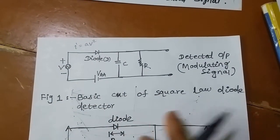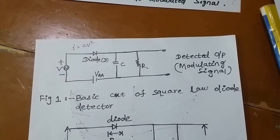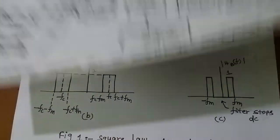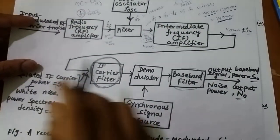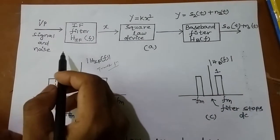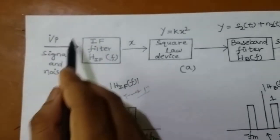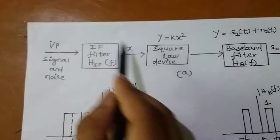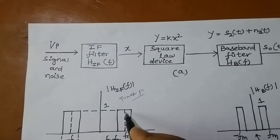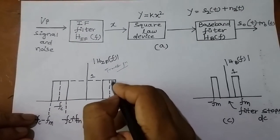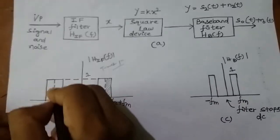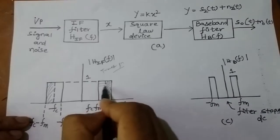Today we will discuss the square law diode detector and its threshold. In the receiving system, the input signal and noise pass through an IF filter, which is a bandpass filter. Since we are discussing double sideband with full carrier, we have two sidebands — the upper sideband as well as the lower sideband.